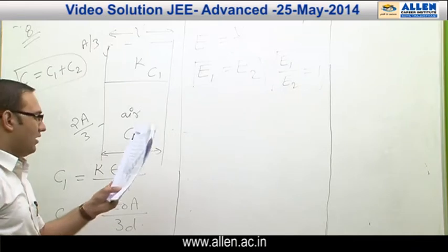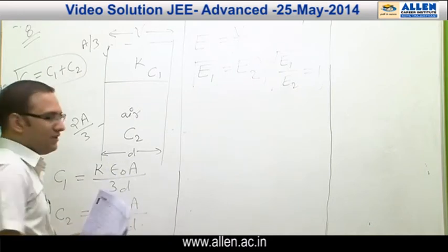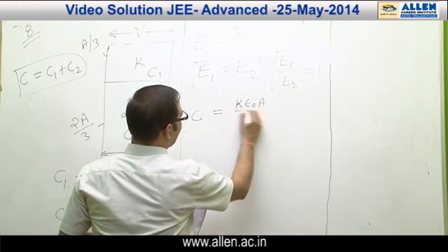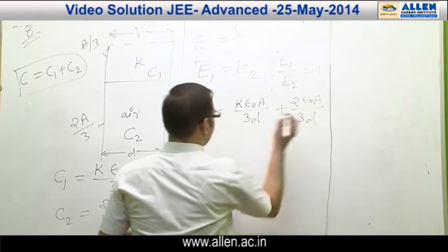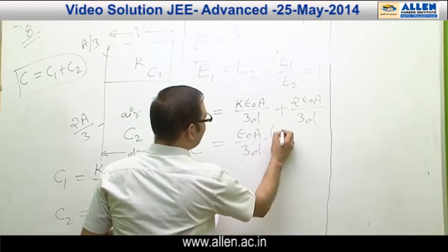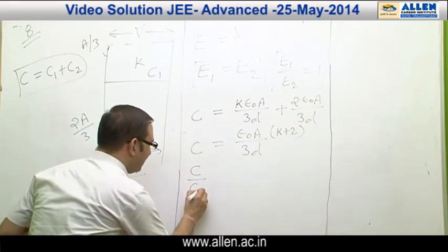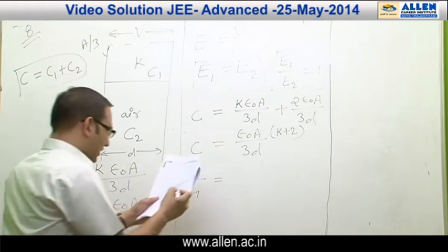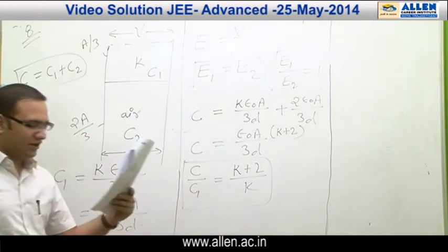In option B it is given that E1/E2 = 1/K, which is wrong. Now for the total capacitance: C = C1 + C2 = Kε₀A/3D + 2ε₀A/3D. After solving this we get C = (ε₀A / 3D) × (K + 2). The ratio C/C1 comes to be (K + 2) / K. So option D is also correct.